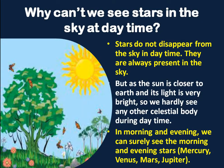Why can't we see stars in the daytime? Actually, the stars do not disappear from the sky in the daytime — they are always present in the sky. But as the Sun is closer to Earth and its light is very bright, we cannot see any other celestial body during the daytime. In morning and evening, when the light of the Sun is less, it is only at that time we can see our morning and evening stars — Mercury, Venus, Mars, or sometimes Jupiter.